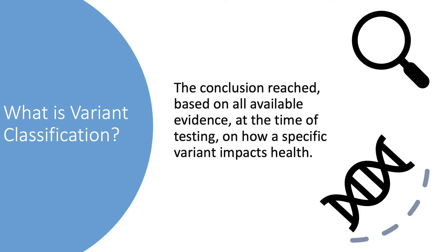All of us have many genetic variants. Some variants impact how a gene works in our body and contribute to disease, while others do not independently cause disease. Genetic testing laboratories use all available information to determine how a specific variant impacts health. The conclusion reached by the laboratory is called the variant classification. It is important to note that new evidence can change our understanding of a variant and alter its classification over time.